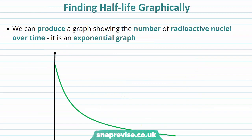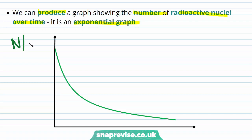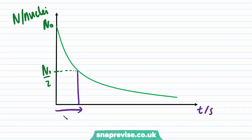Now we're going to look at finding half-life graphically. We can produce a graph showing the number of radioactive nuclei over time — it's an exponential graph. On the y-axis we have capital N, which represents the number of nuclei, and initially it has a value of N₀. This is plotted against time t, measured in seconds. The half-life can be found from the time taken for the number of radioactive nuclei to halve from the graph, and you can see that it remains constant.